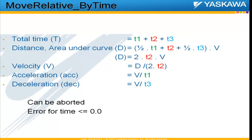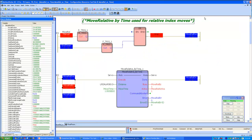Features of this function block include that it can be aborted at any time by another motion function block. Also, if the user inputs a time less than or equal to zero, an error ID specific to this function block is generated.